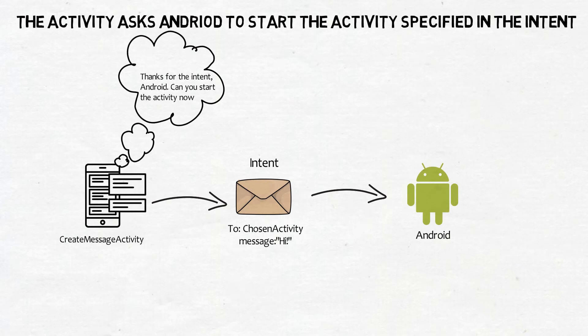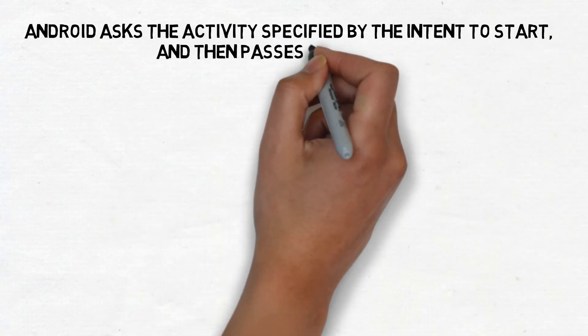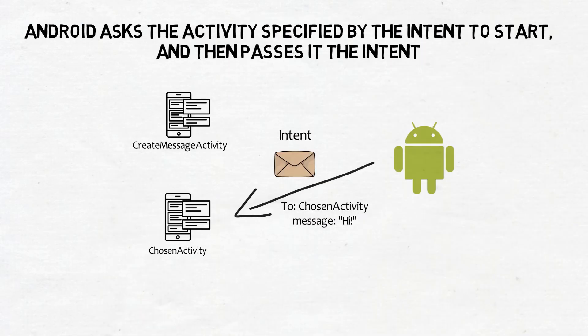The activity asks Android to start the activity specified in the intent. Android starts the activity specified by the intent and then passes the intent to it.